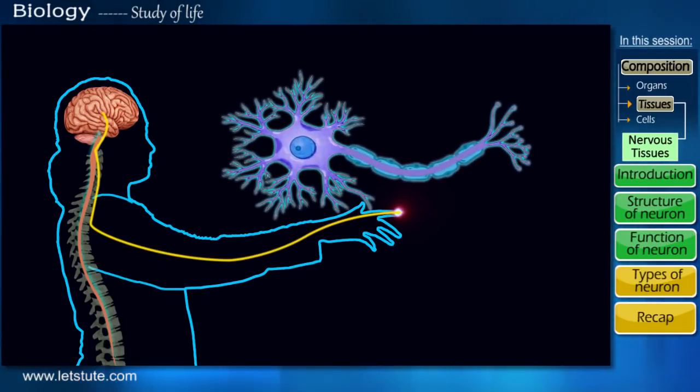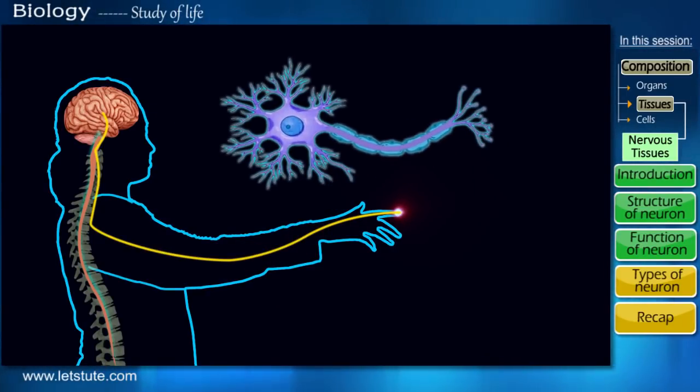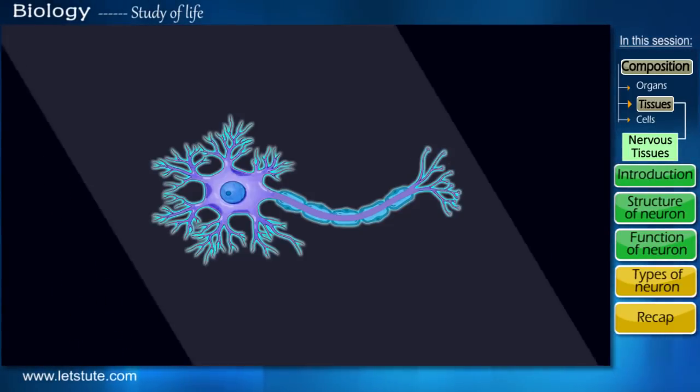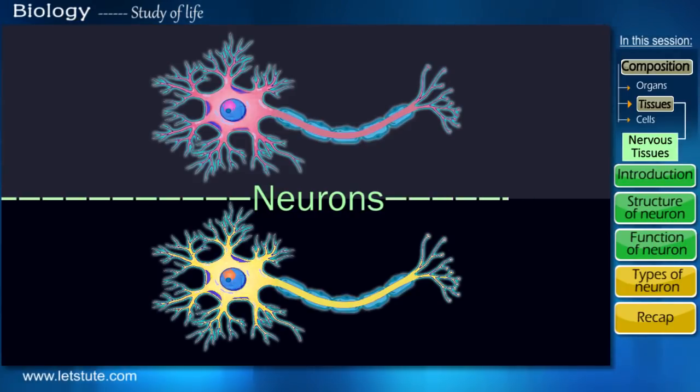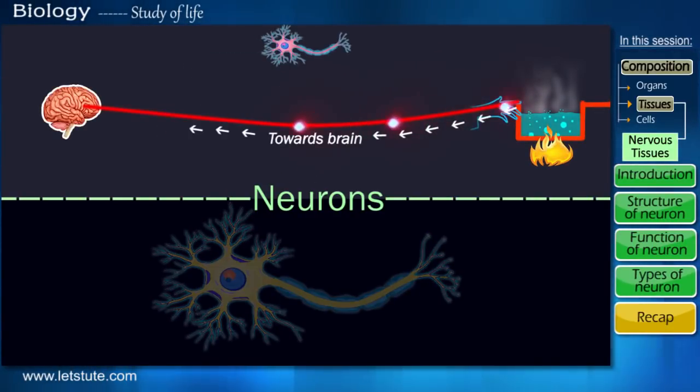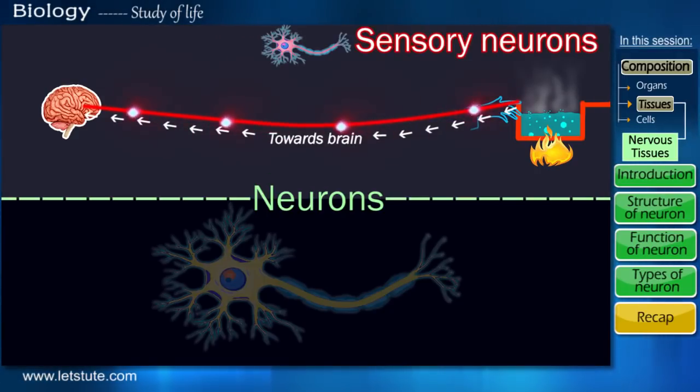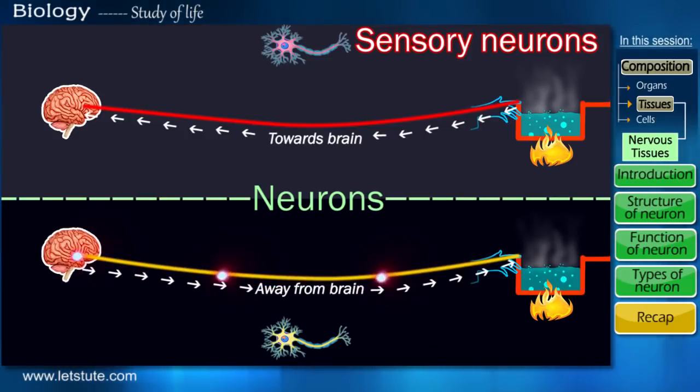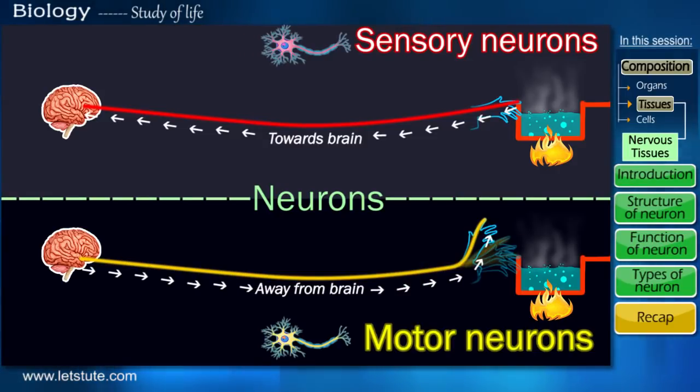But based on the role these neurons perform, that is either sensing something or performing the action, these neurons may be of two types. The cells that tell your brain that the object is hot are one type of cells called sensory neurons as they sense something and let your brain know. While the cells that tell your hand to pull back from the object are the other type of cells that do the necessary response and hence are called motor neurons.